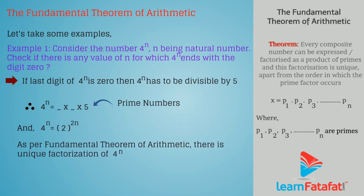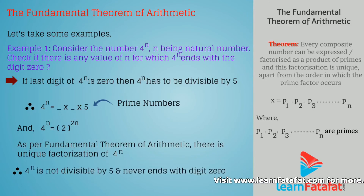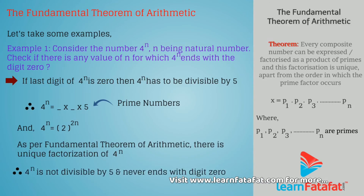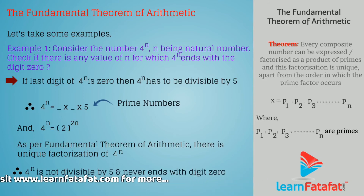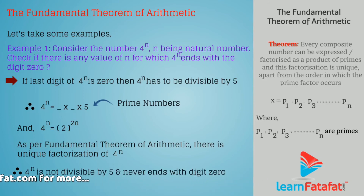As per the Fundamental Theorem of Arithmetic, there is a unique factorization of 4. Therefore, 4 raised to power n is not divisible by 5 and will never end with digit 0.